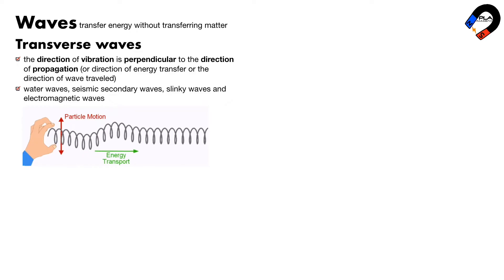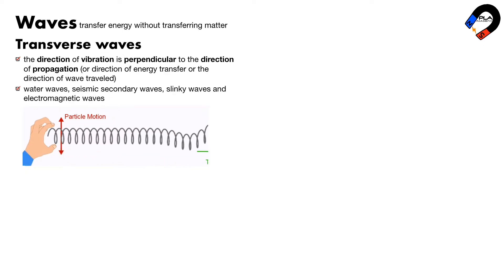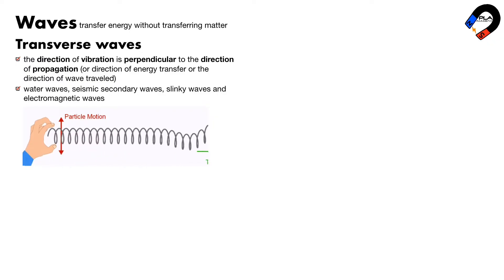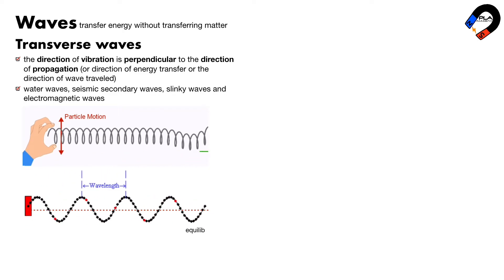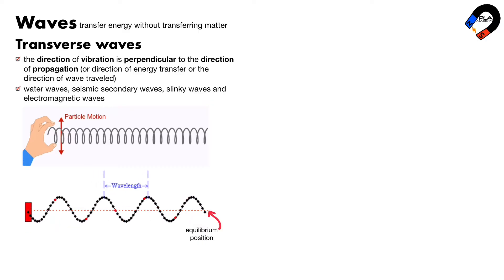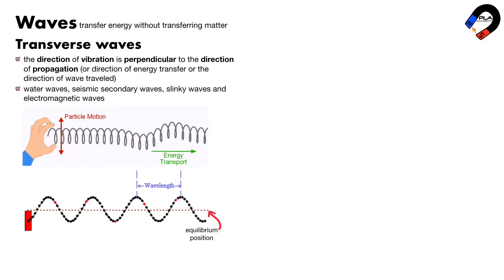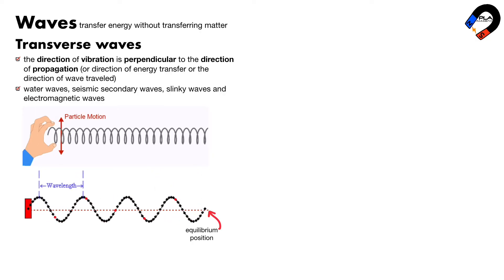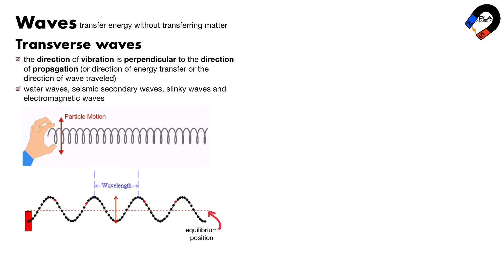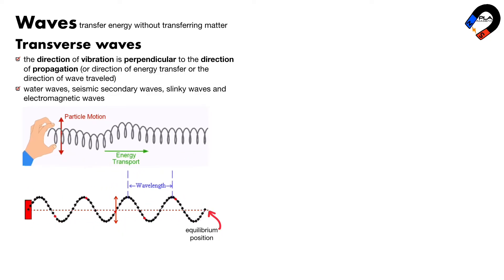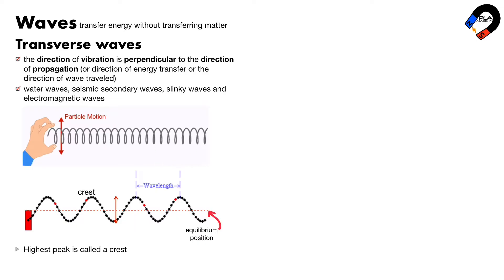We can demonstrate a transverse wave by shaking the spring up and down. The direction of vibration is up and down, which is perpendicular to the direction of wave propagation to the right. The wave vibrates around the equilibrium position. When the wave vibrates for one cycle it creates one wave that travels one wavelength. The highest peak is called a crest and the lowest peak is called a trough.